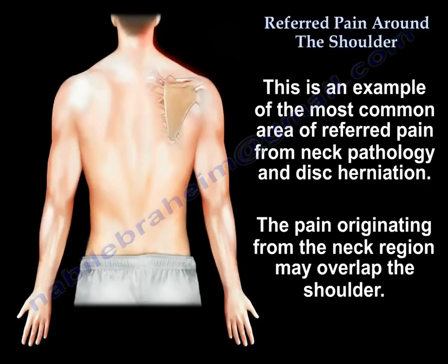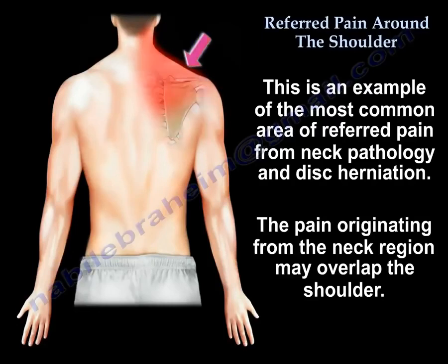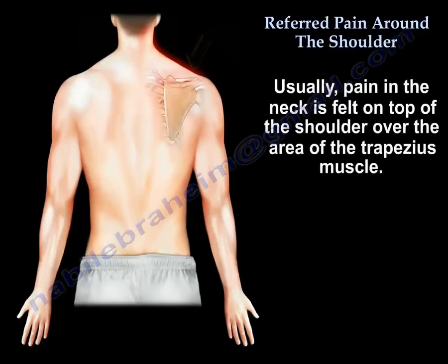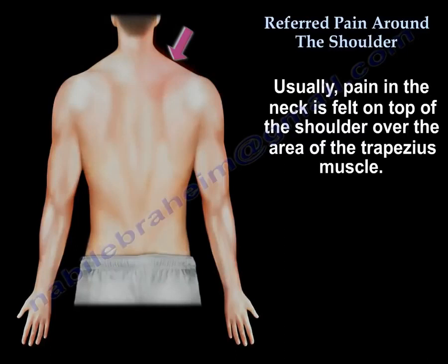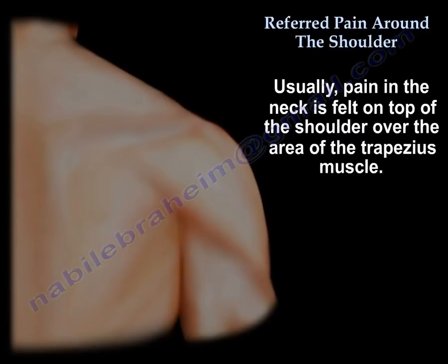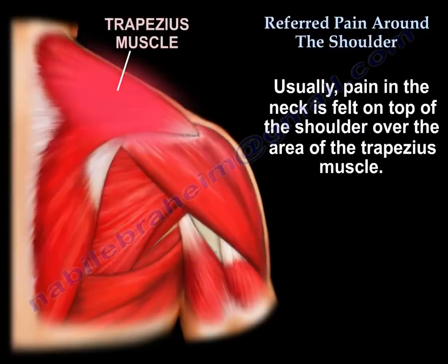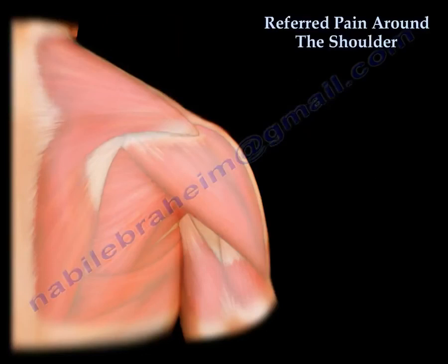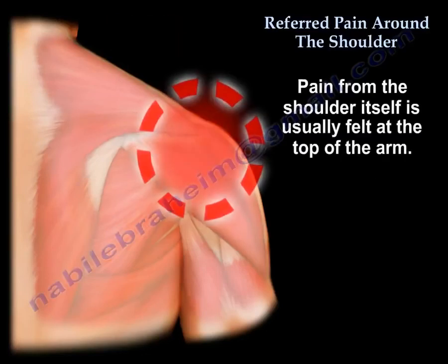As you can see here, the pain originating from the neck area may overlap the shoulder. Usually pain in the neck itself is felt on top of the shoulder over the area of the trapezius muscle. Pain from the shoulder itself is usually felt at the top of the arm.